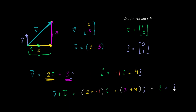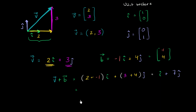To see this matches how we saw vector addition before, we can represent vector b as the column vector (−1, 4). If we add v and b as column vectors, we add corresponding terms: 2 plus negative 1 is 1, and 3 plus 4 is 7, giving us the column vector (1, 7). This is the exact same representation — one uses unit vector notation and the other represents it as a column vector.